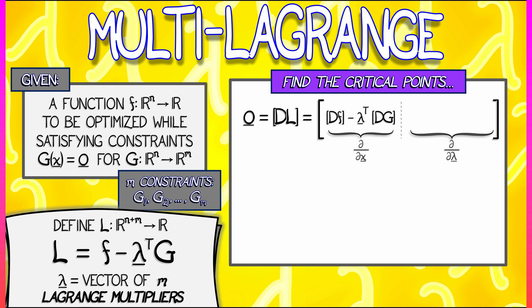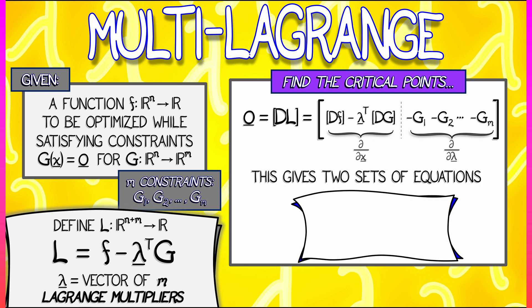That's the first part of the derivative of L. For the second part, we take the partials with respect to the lambda variables. That gives us simply minus g, because f does not depend on lambda and g does not depend on lambda — you've only got that lambda dot g. Now we set that equal to zero, which gives us two sets of equations: the first being that df equals lambda dot dg, and the second being that g equals zero — the constraint is satisfied.